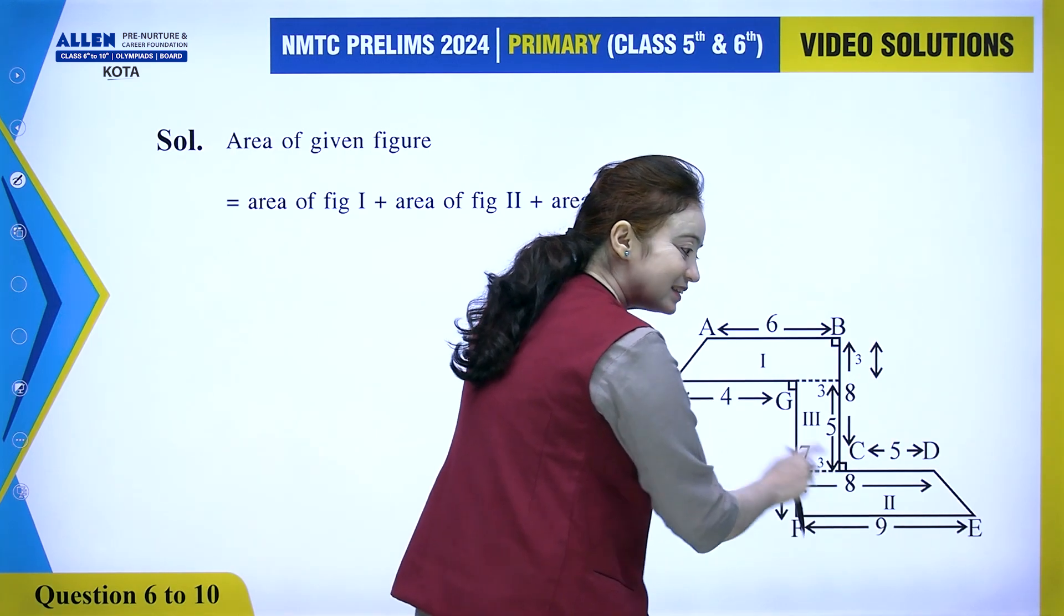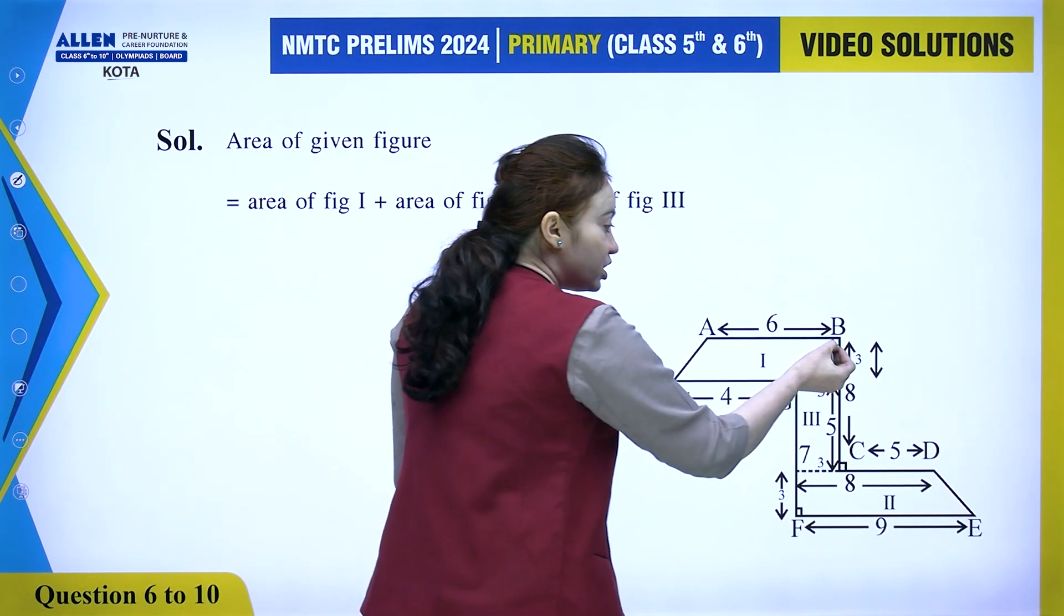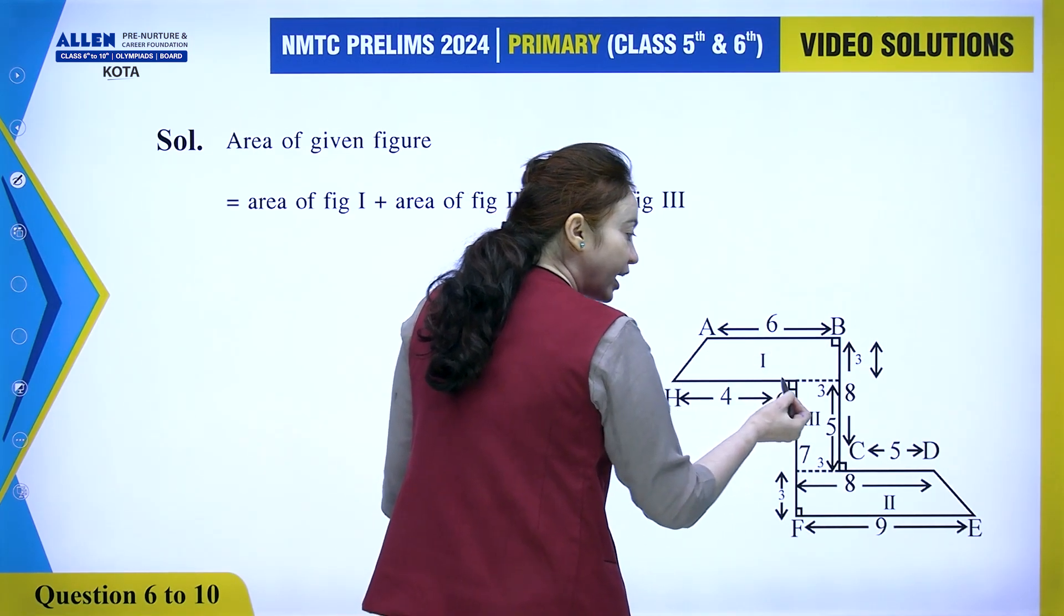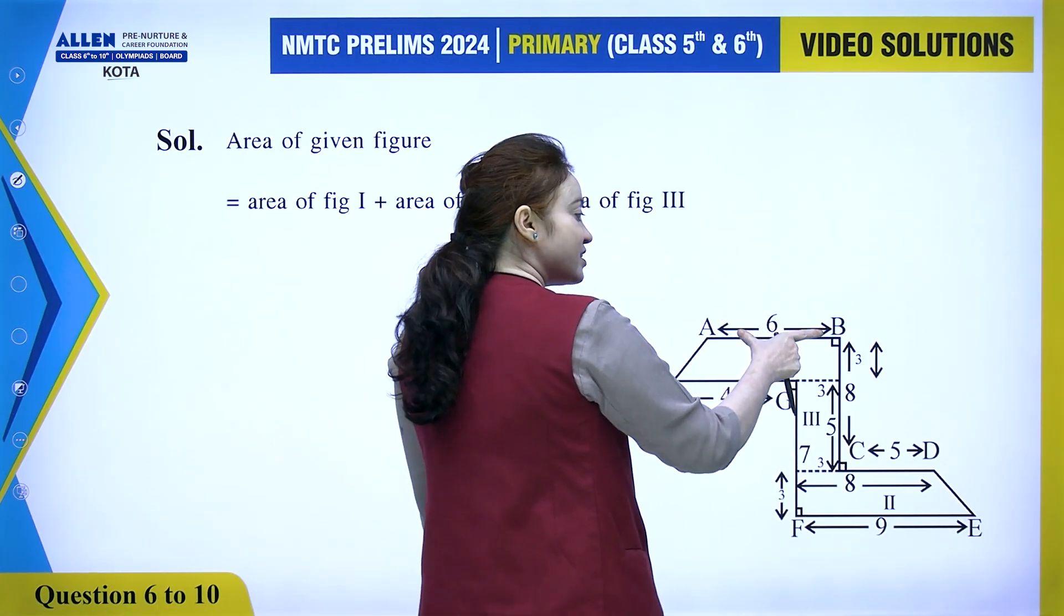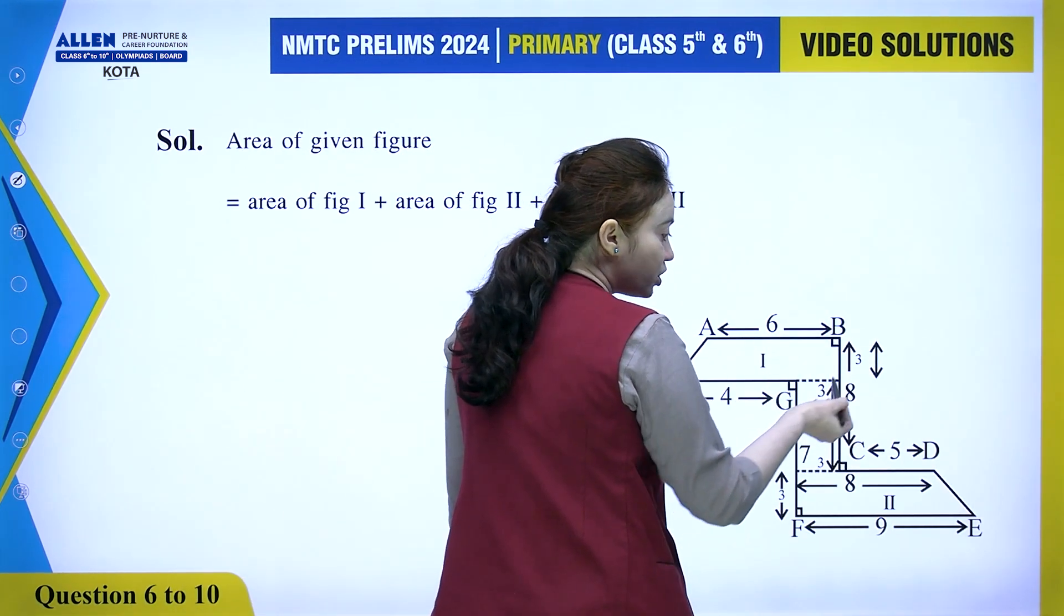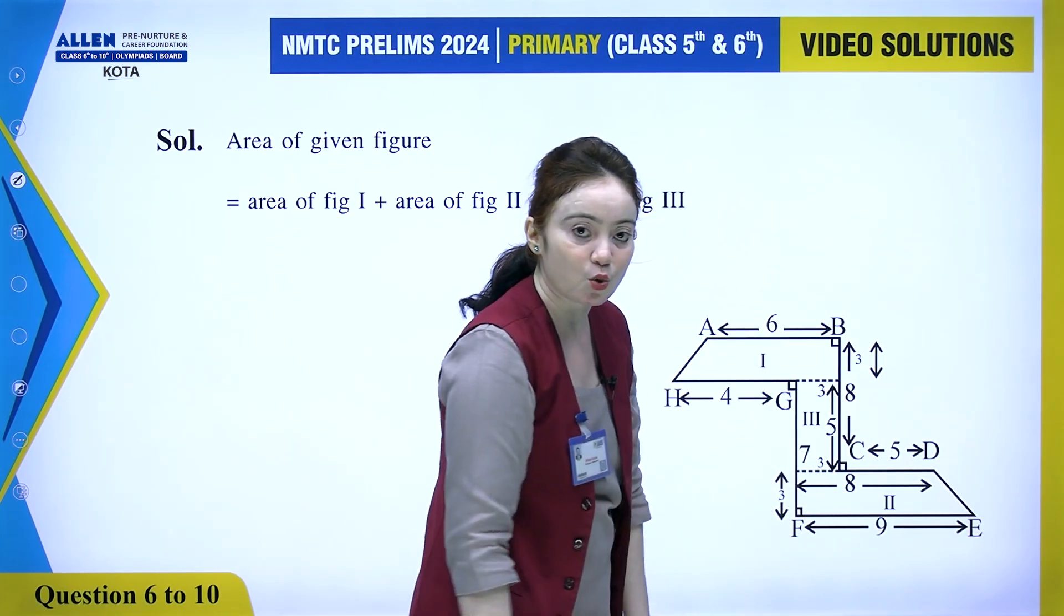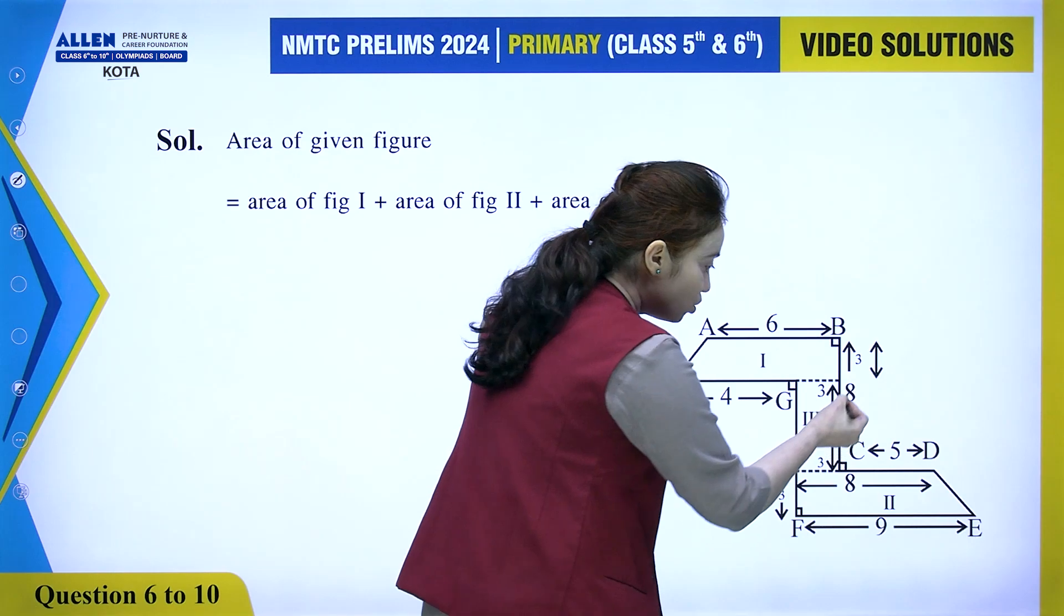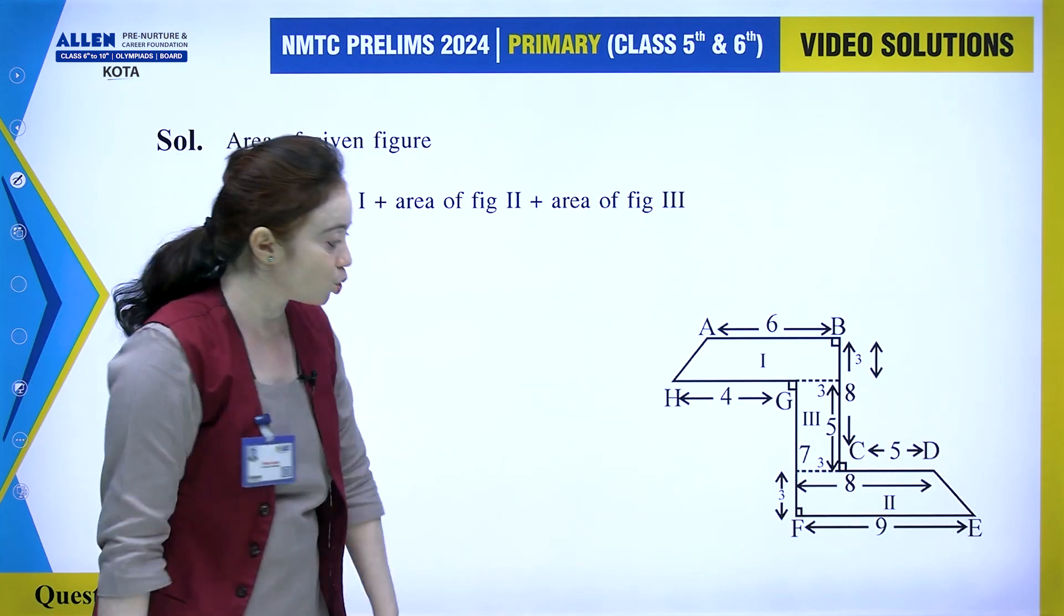The total length is 8. For this trapezium, the opposite sides are 9 and 8, with height 3. For the other trapezium, opposite sides are 6 and 7, with height 3. For the rectangle in the middle, after cutting 3 from the 8 length, the remaining length is 5, and the width is 3. So we've divided it into three parts.